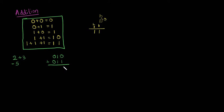0 plus 1 is 1, 1 plus 1 is 0 and we carry a 1 forward to the next position, and 0 plus 0 is 0, then 0 plus 1 is 1. This is 5. The weight here is 1, the weight here is 2, the weight here is 4. So 4 plus 1 equals 5. We got the result.